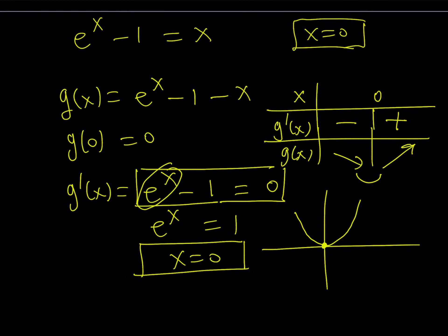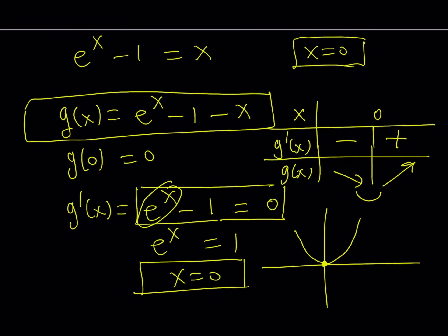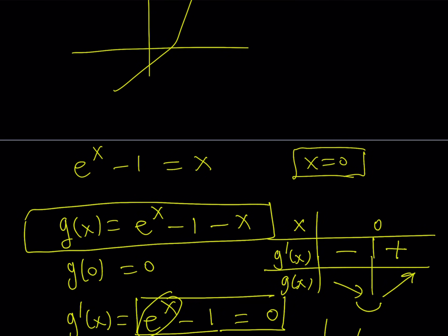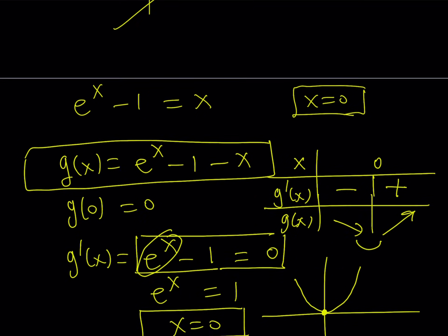Which pretty much means that it is only going to have one x-intercept, which means this equation has only one solution and that is 0, which again verifies that our original problem has one solution at x equals 0.